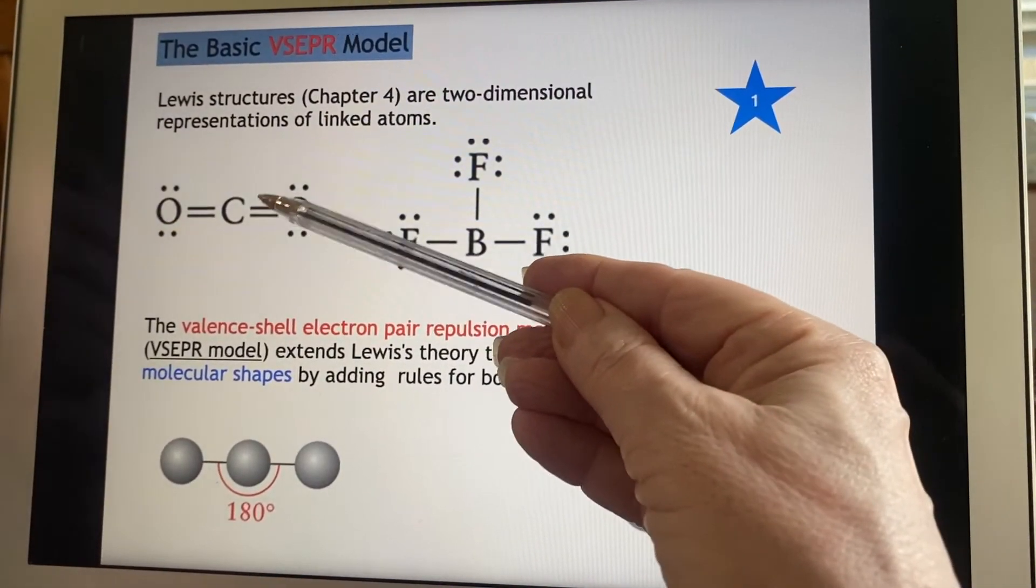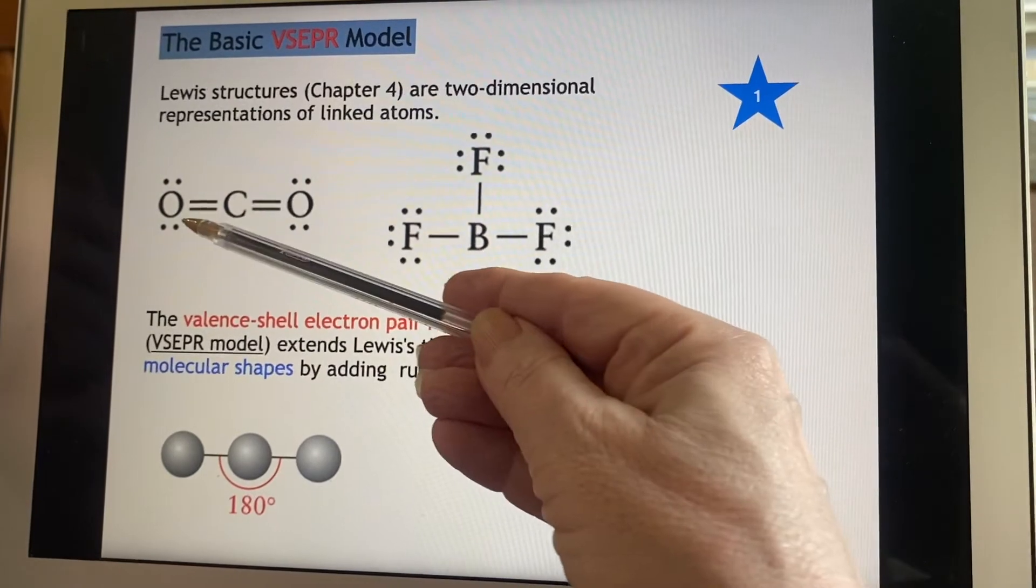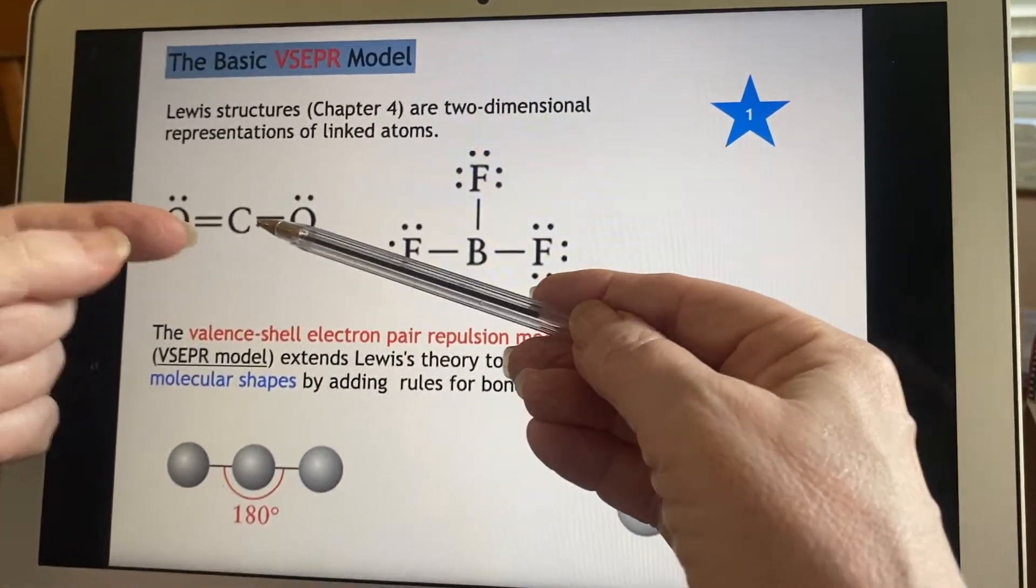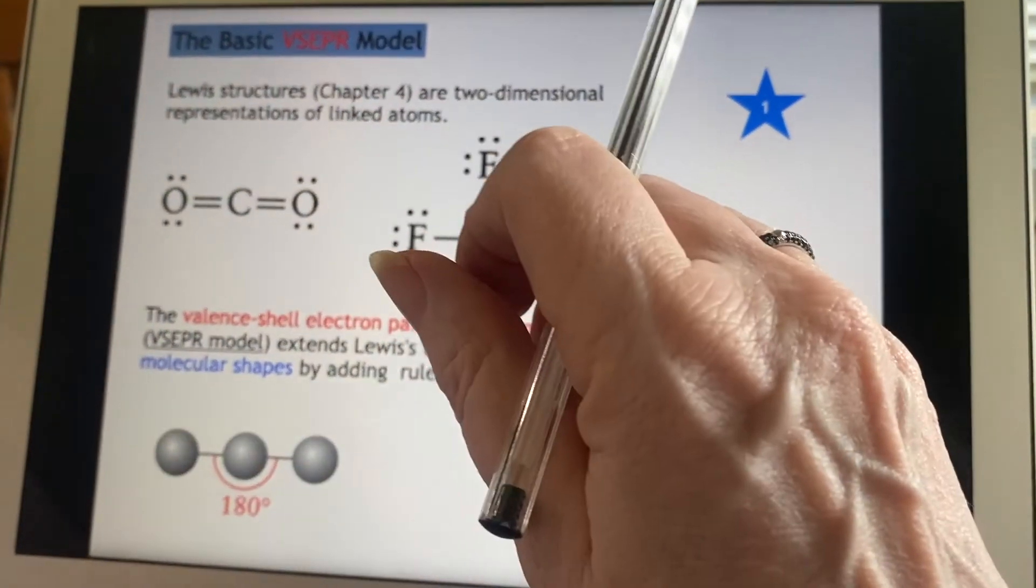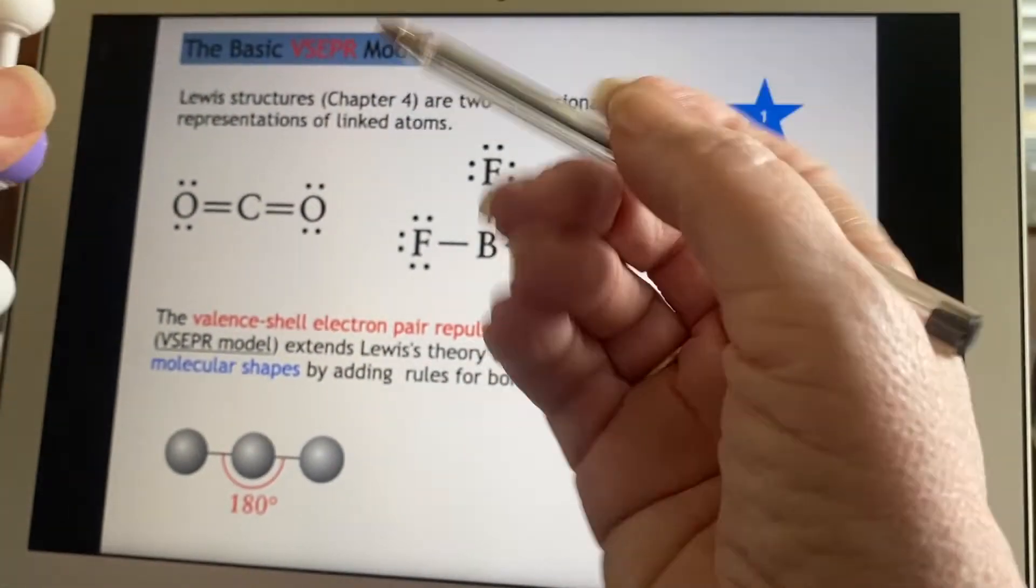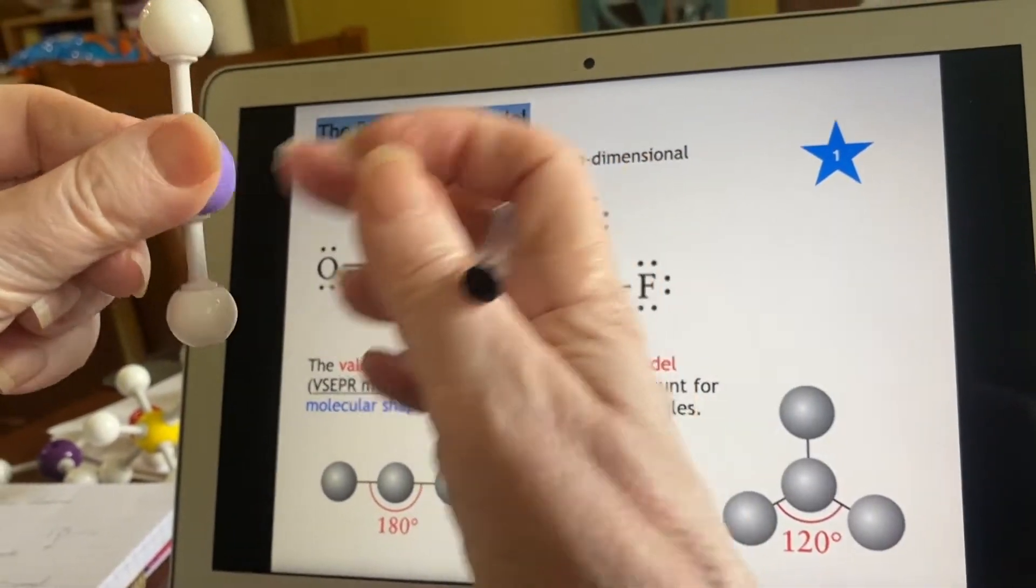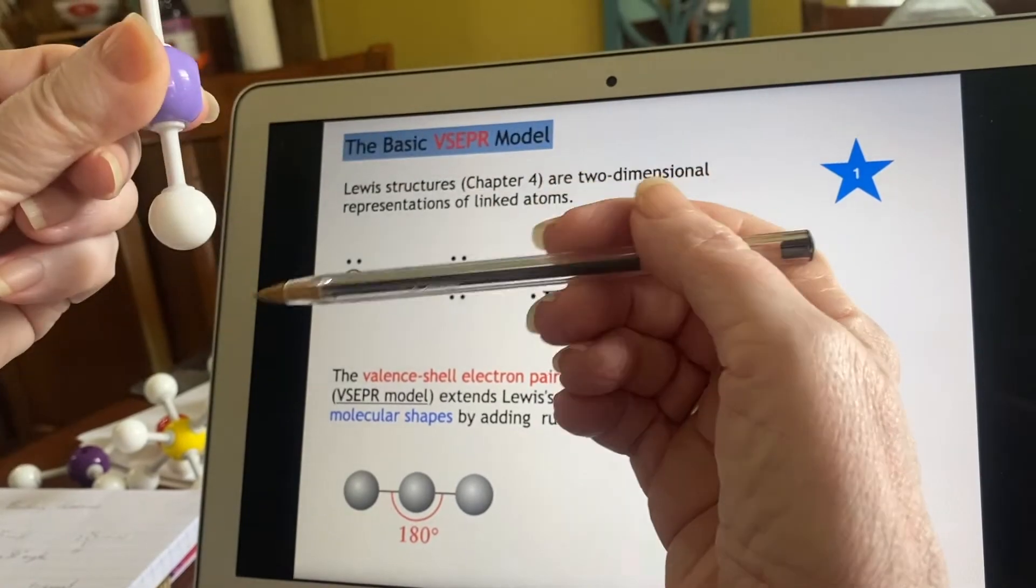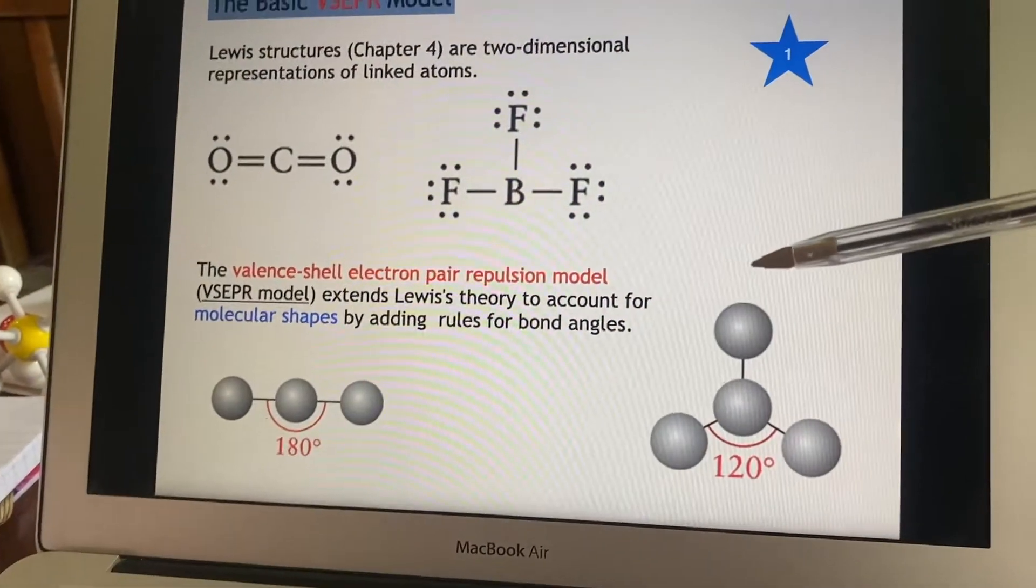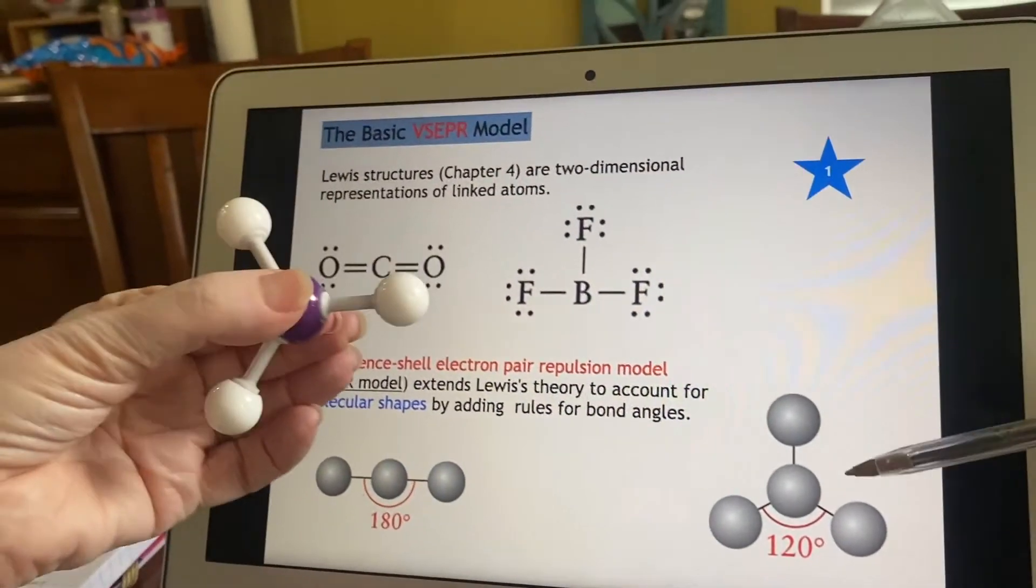If there's two areas of electrons here and here, they're going to try to get as far away from each other as possible. And the best way to do that is to get on absolutely opposite sides of the central atom. If I can get to opposite sides of that central atom, I am far away from the other guy as I can be.